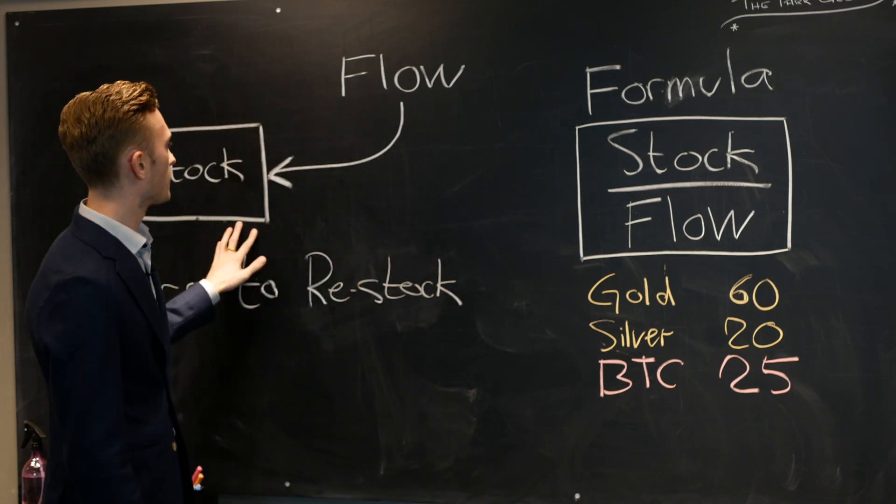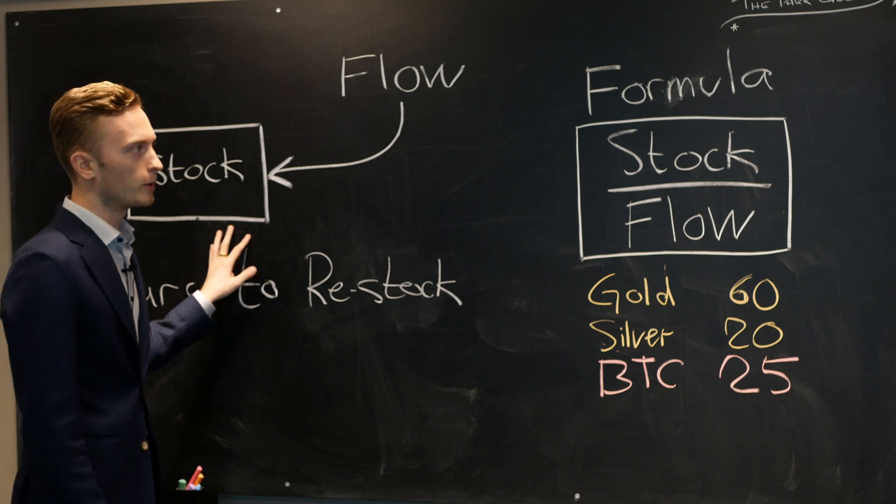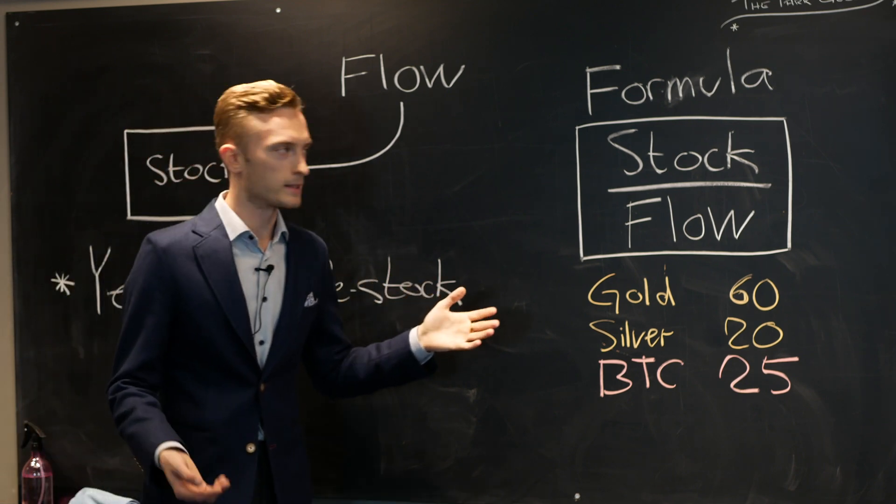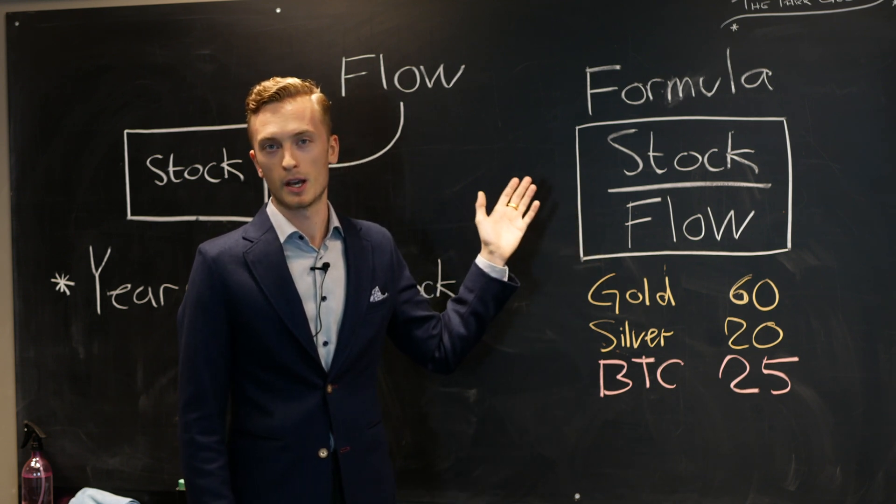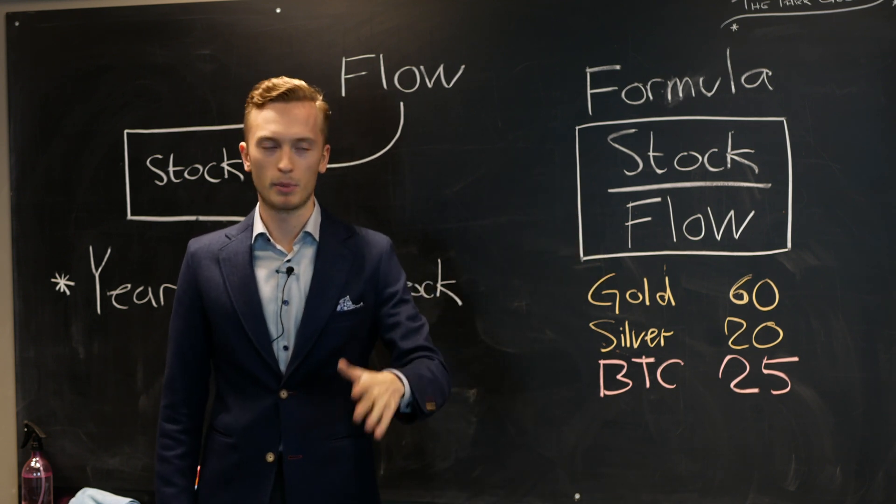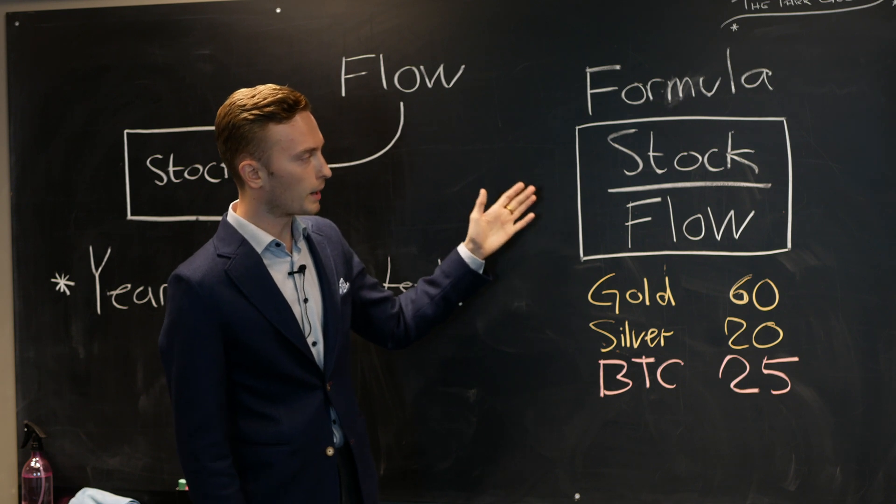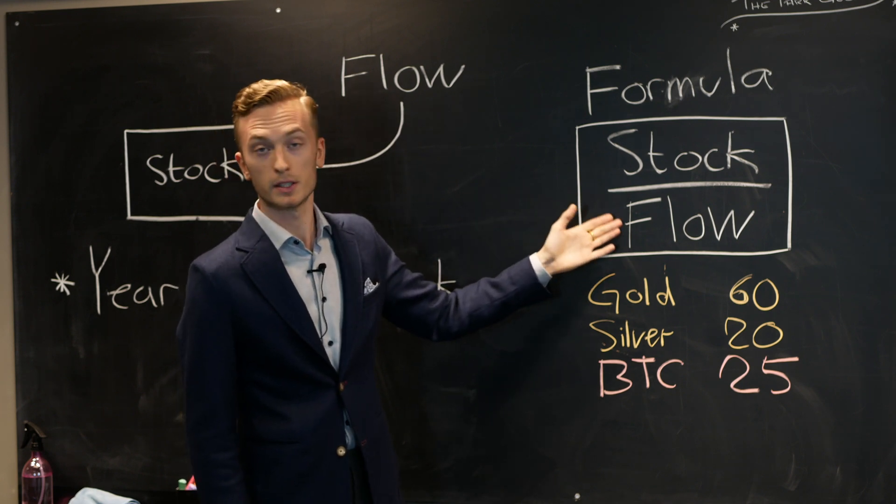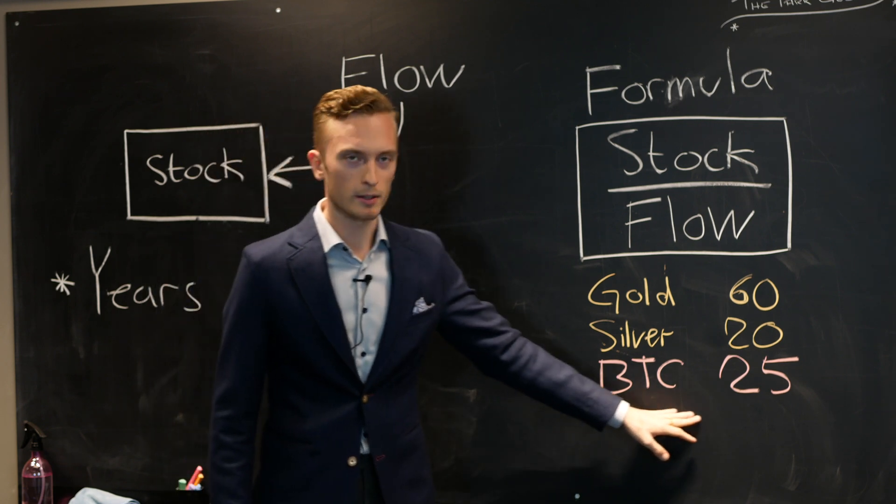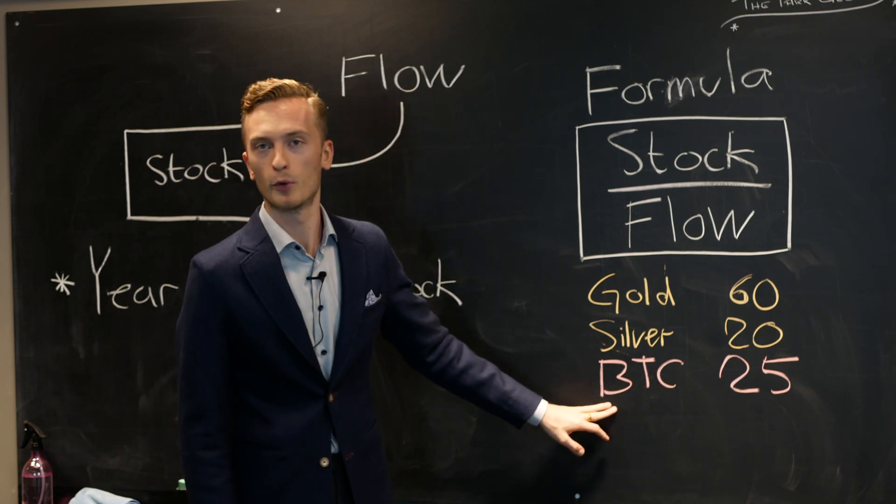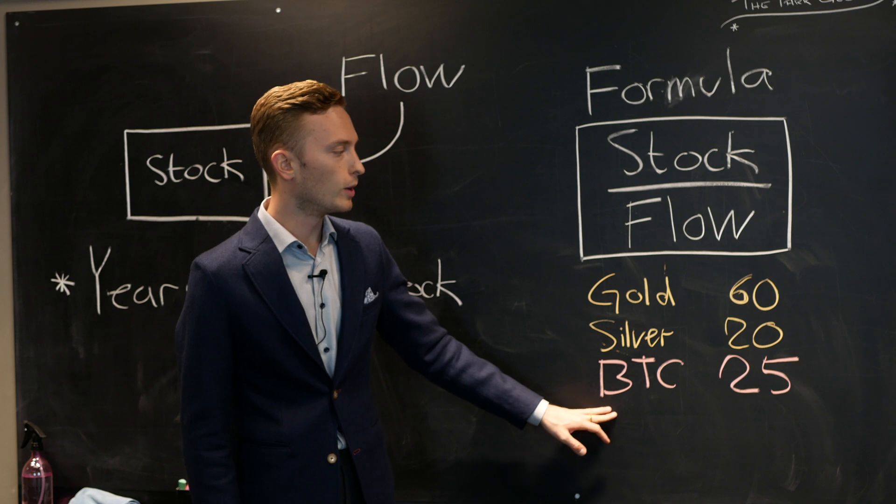So how do we calculate the stock to flow of Bitcoin? Well just like any other asset you take the stock you divide it by the flow. So in this case we would take 17.5 million Bitcoin and we would divide it by the flow of 0.7 and that will give us as you can see roughly 25 as the number for Bitcoin. The stock to flow ratio for Bitcoin.